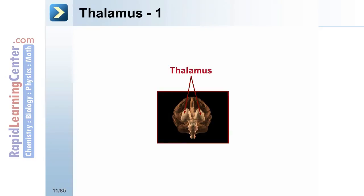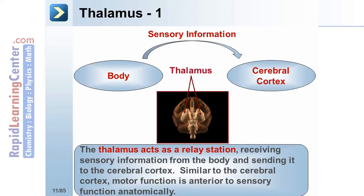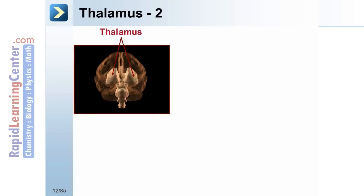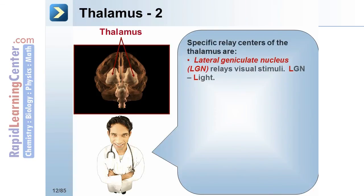The thalamus acts as a relay station, receiving sensory information from the body and sending it to the cerebral cortex. Similar to the cerebral cortex, motor function is anterior to sensory function anatomically. Specific relay centers of the thalamus include the lateral geniculate nucleus, or LGN, which relays visual stimuli — this can be remembered with the L in LGN standing for light.